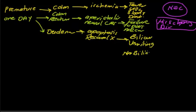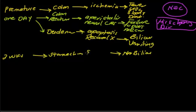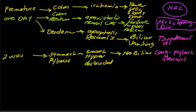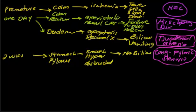In the same age group, non-bilious vomiting points to a stomach problem. In a three-week-old baby with a stomach problem, the issue is smooth muscle hypertrophy — an obstructive problem. The pylorus region of the stomach is affected. Every three-week-old baby with non-bilious vomiting has congenital pyloric stenosis. So until now we have four diseases: necrotizing enterocolitis, Hirschsprung disease, duodenal atresia, and congenital pyloric stenosis.